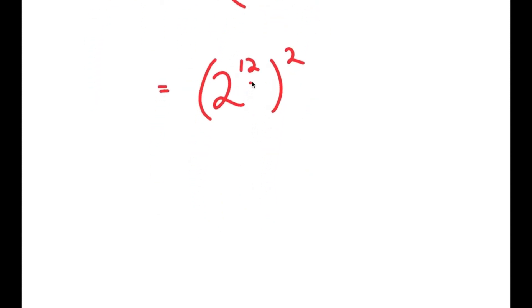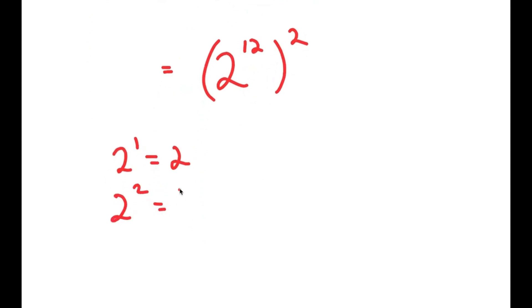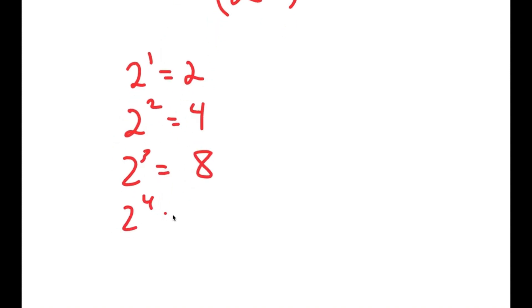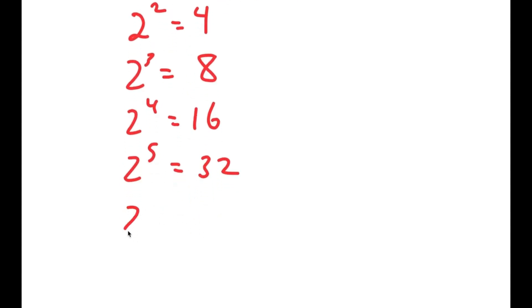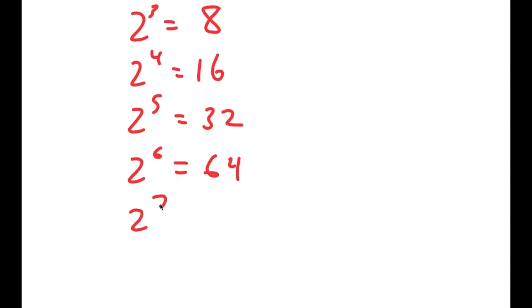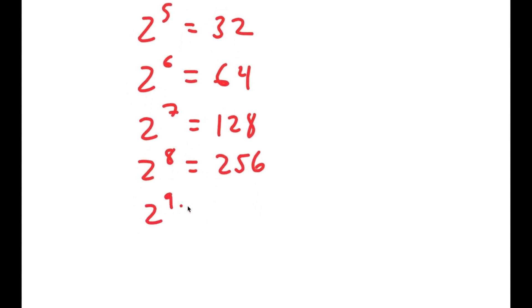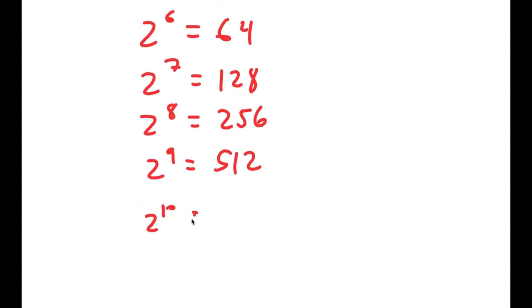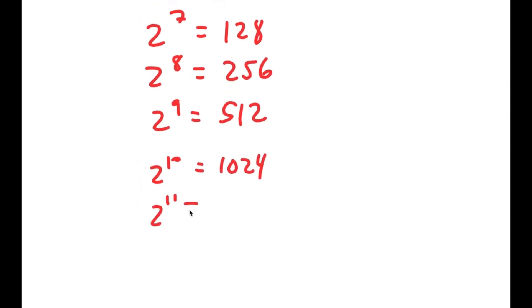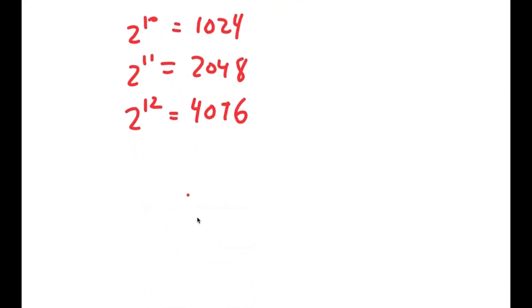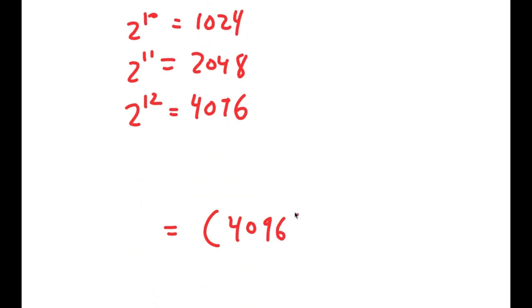Now, 2 to the power of 12: 2 to the power of 1 is 2, 2 to the power of 2 is double of that so 4, 2 to the power of 3 is double of 2 to the power of 2 which is 8. This pattern continues, doubling each time, until I reach 2 to the power of 12, which equals 4,096. So now I get 4,096 squared.